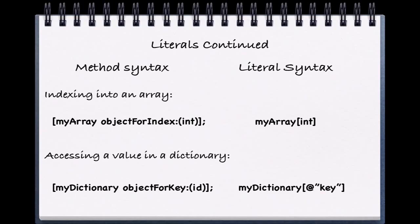So in order to index into an array, before we used the method objectForIndex and we passed in an int value. Now we can access an element or object in our array by using bracket syntax after the name of our variable, and we'll get the object of that index returned to us.